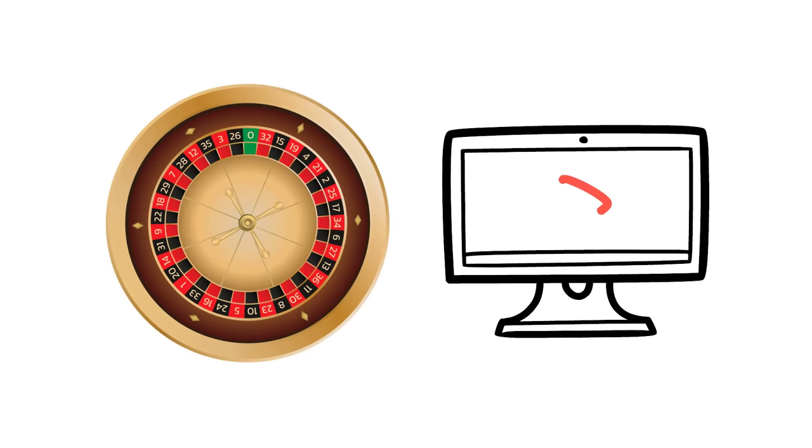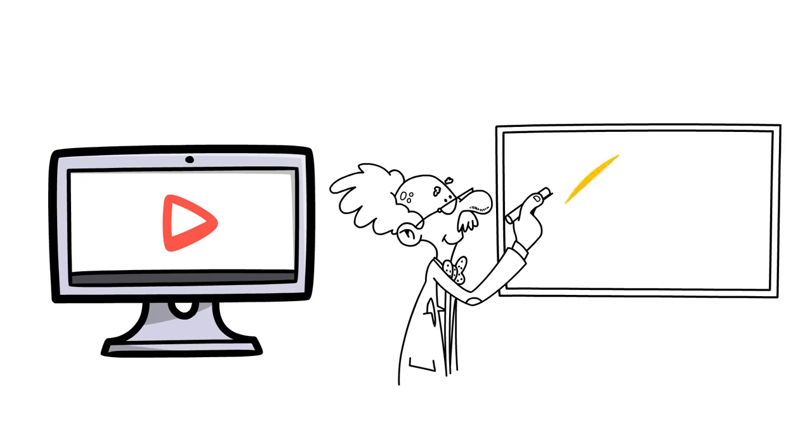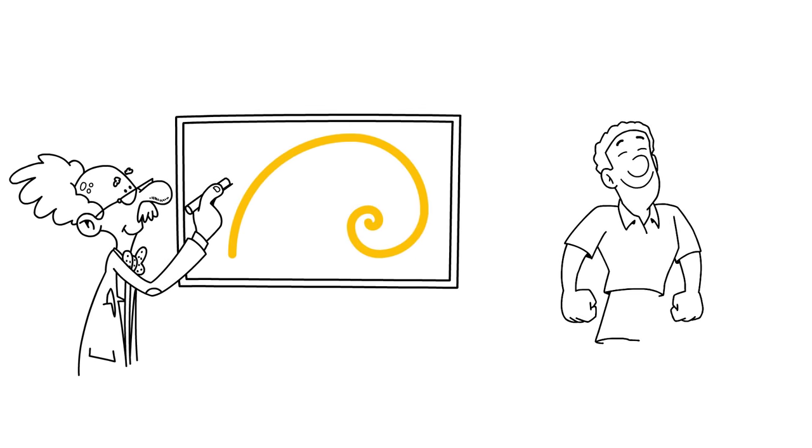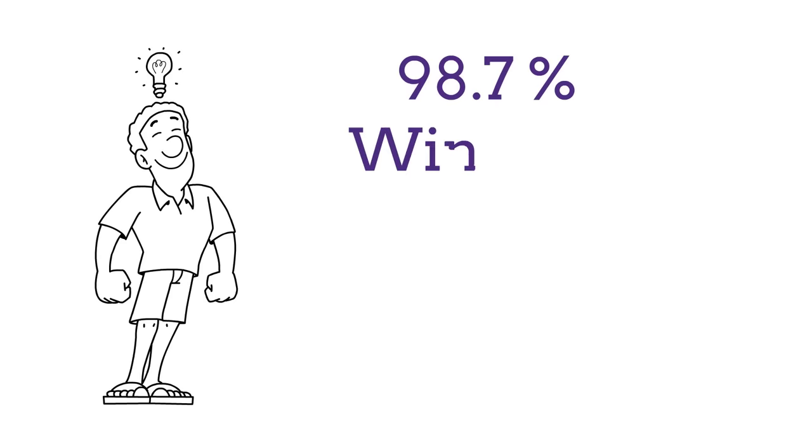In this video we're going to look at how a special sequence of numbers can create one of the best roulette systems I've ever seen. When done properly, this roulette strategy can have up to a 98.7% win rate. I'll explain how to achieve this later in the video.